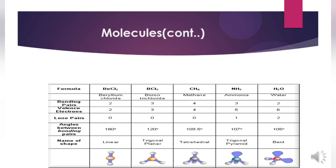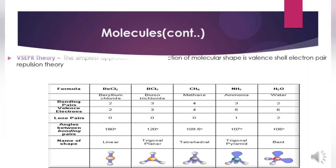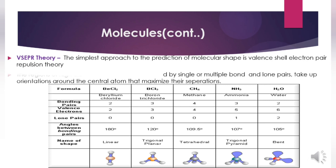VSEPR — Valence Shell Electron Pair Repulsion theory — is the simplest approach to predicting molecular shape. The regions of high electron density, represented by single or multiple bonds and lone pairs, take up orientations around the central atom that maximize their separations. Beryllium chloride has two bonding pairs, two valence electrons, zero lone pairs, and an angle of 180 degrees between bonding pairs. The shape is linear.